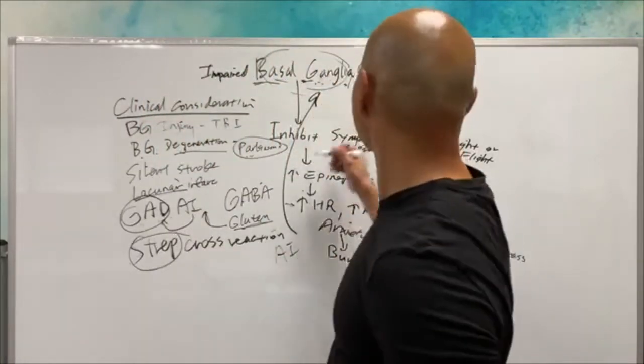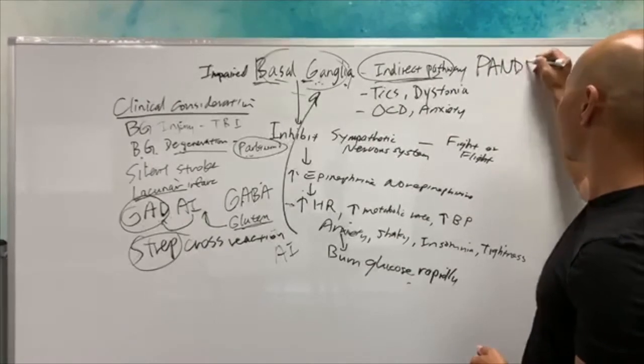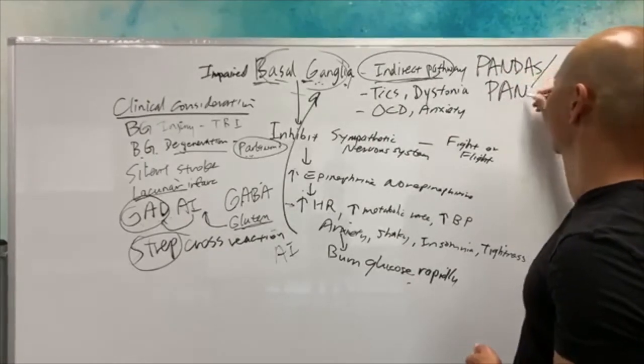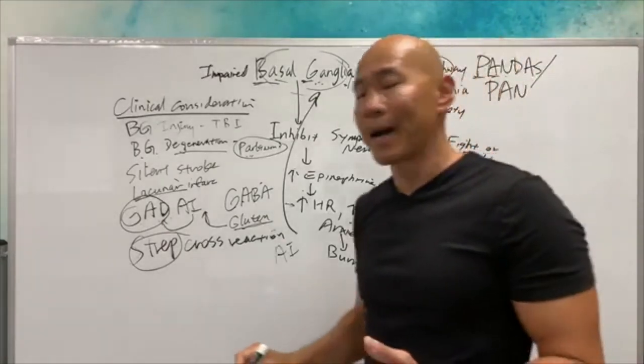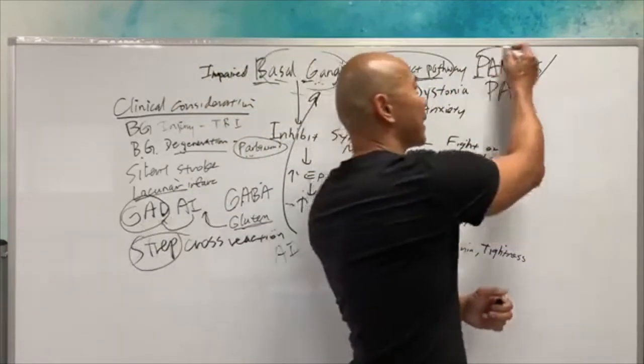This is called PANDAS. I'm going to write it over here. PANDAS or PANS. This is pediatric autoimmune triggered by strep.